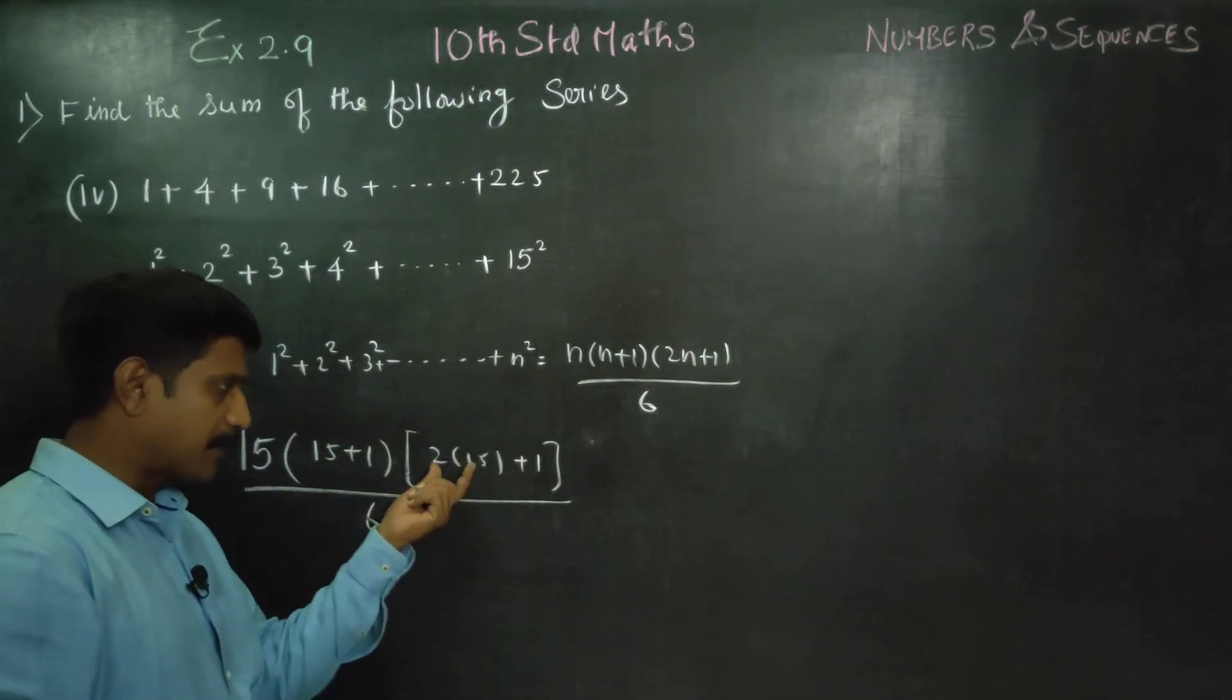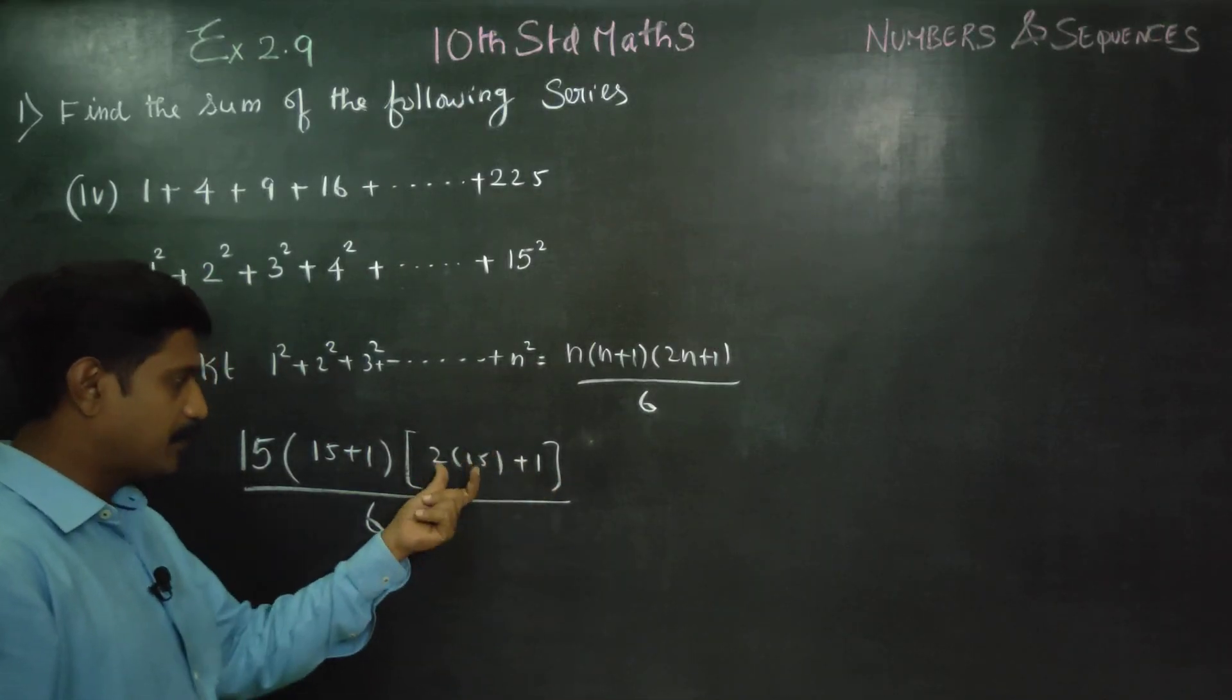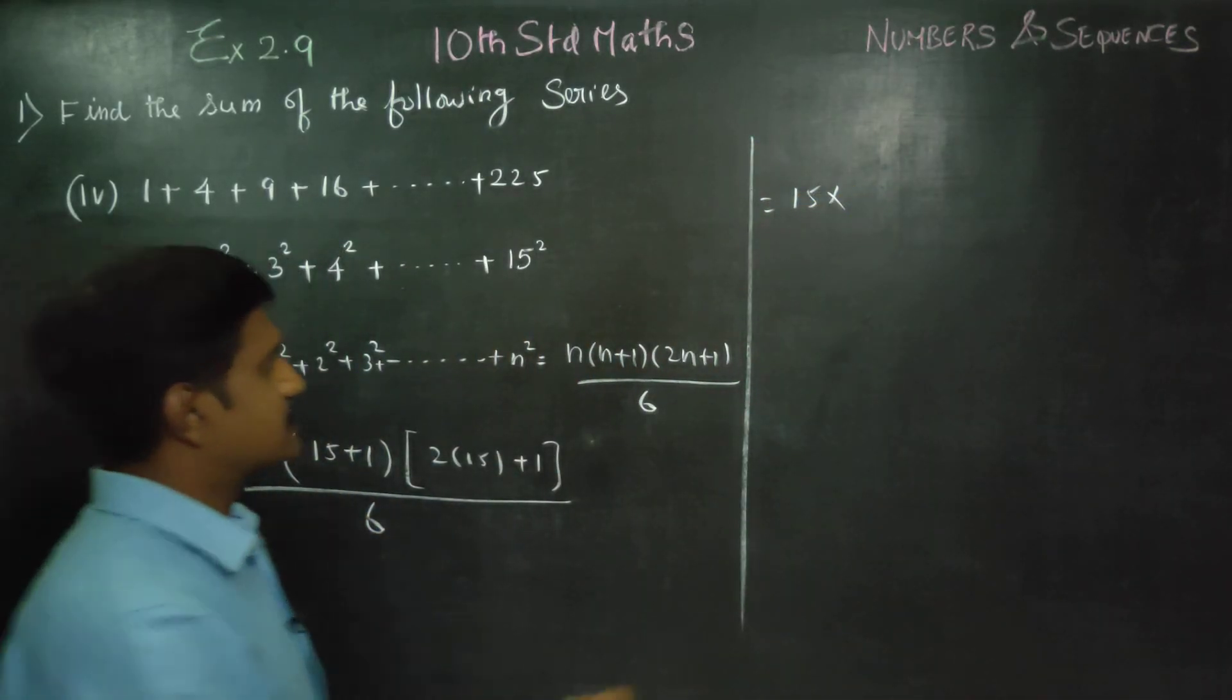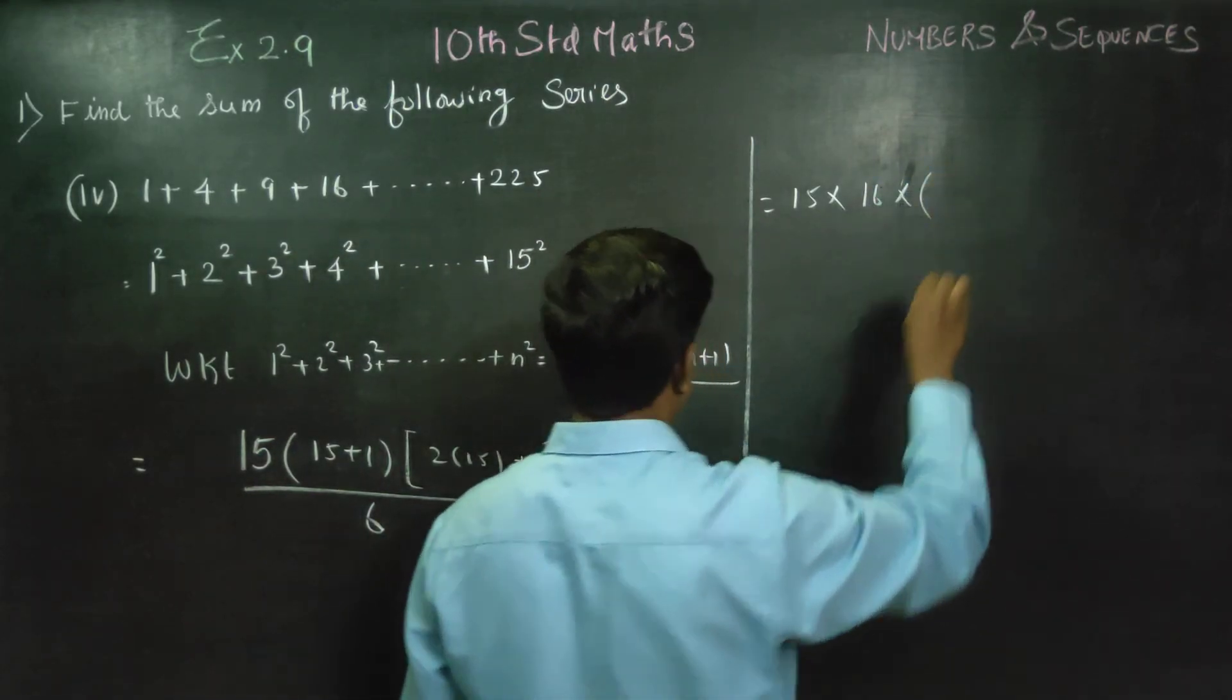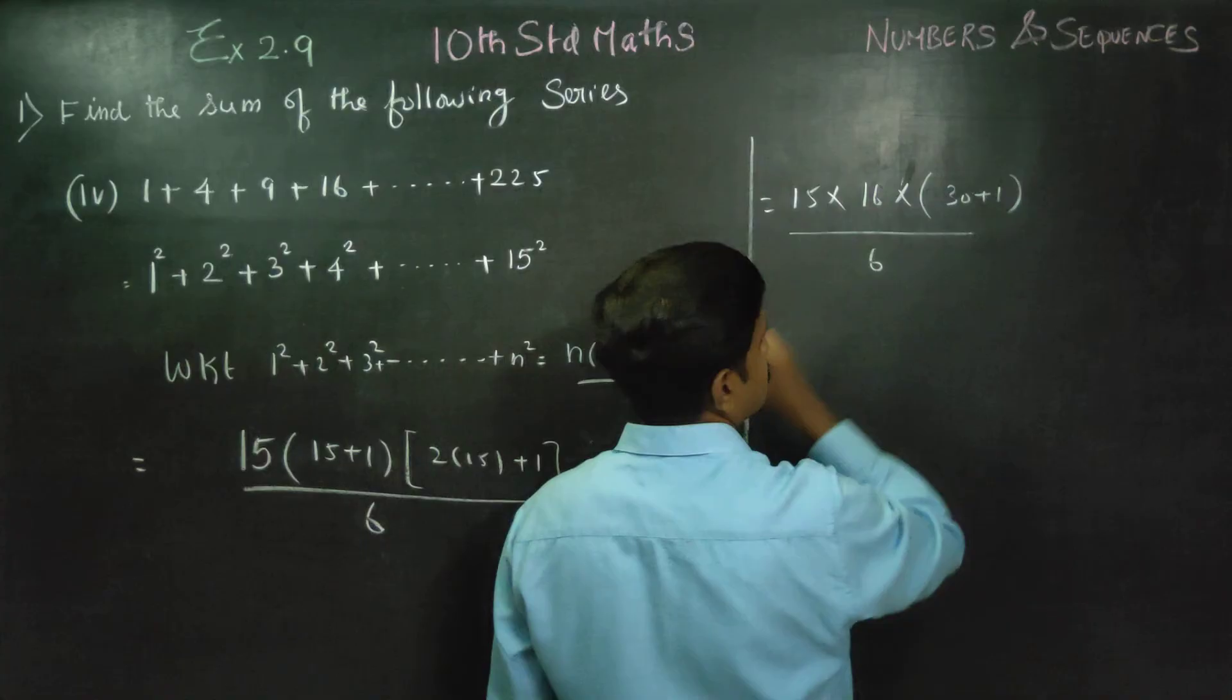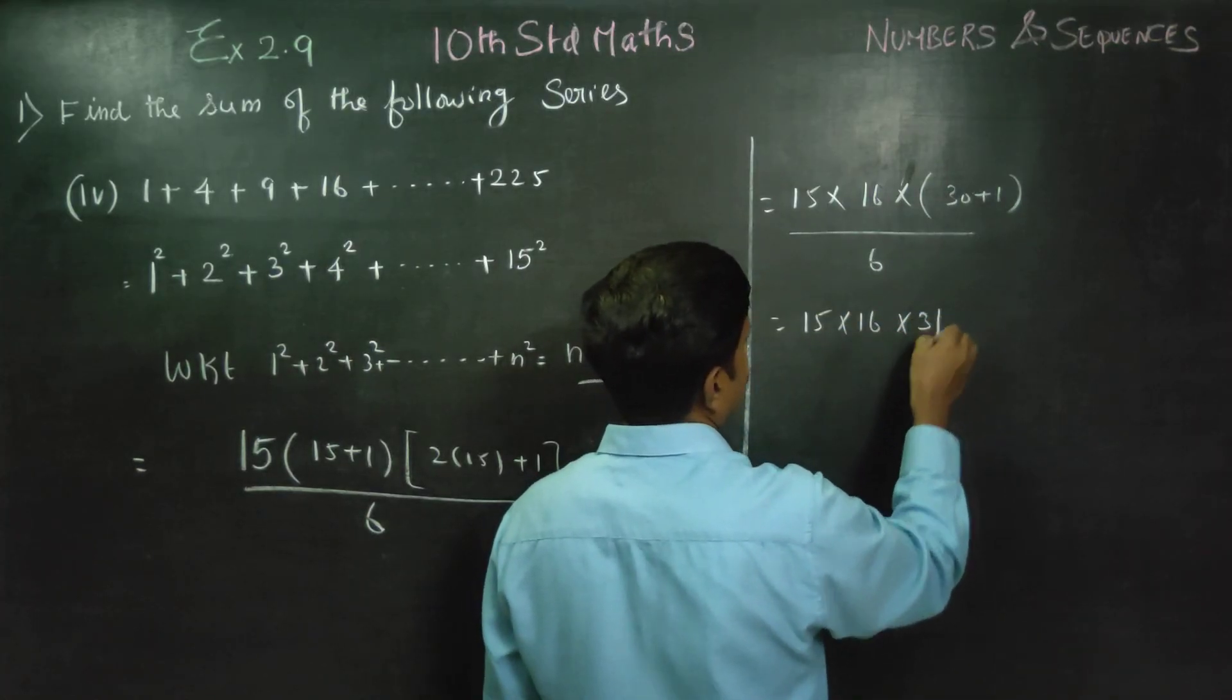Multiply. 15 into 15 plus 1 is 16. 2 into 15 you have to write as 30 plus 1, divided by 6. 15 into 16 into 31 by 6 is your answer.